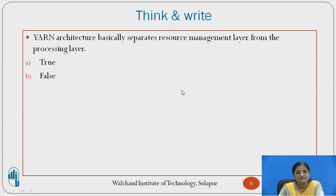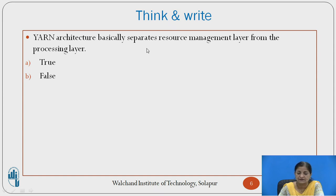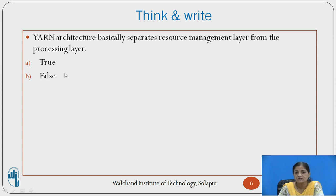Since Hadoop 1.0 was tightly coupled around MapReduce, it created many problems. First, MapReduce was purely written in Java, so very good Java experts were needed to write MapReduce applications. Second, both resource management and data processing were done by MapReduce alone. In Hadoop 2.0, this problem was overcome by introducing YARN, which handled resource management functions. So the answer to the question is true — YARN was able to separate the resource management layer from the processing layer.